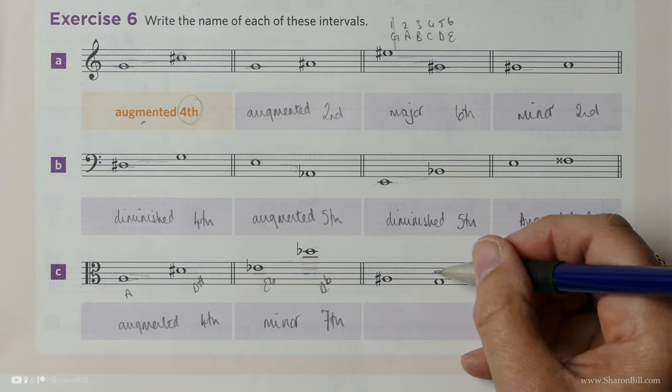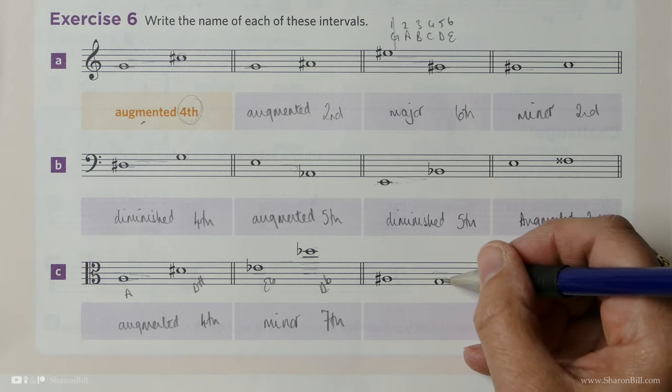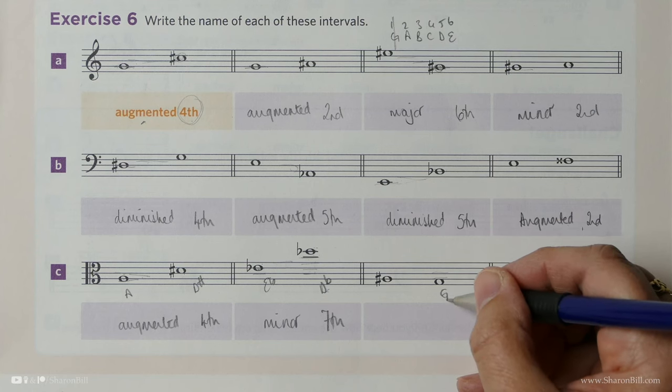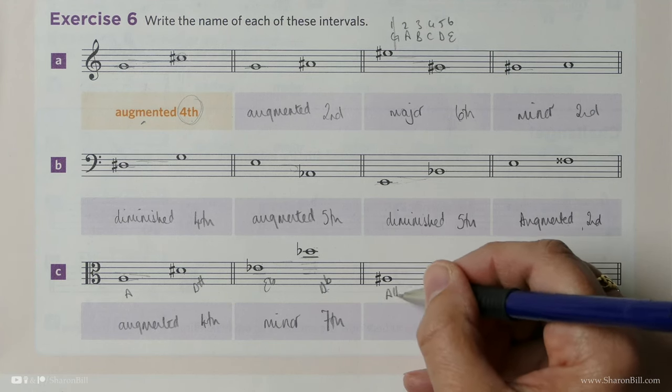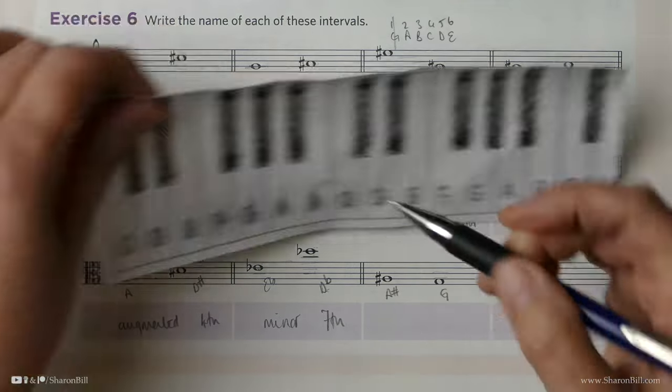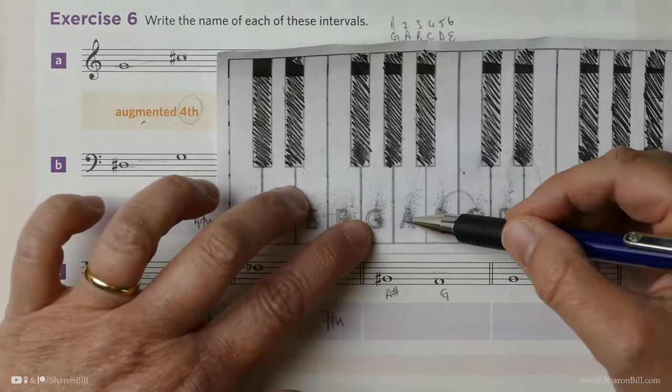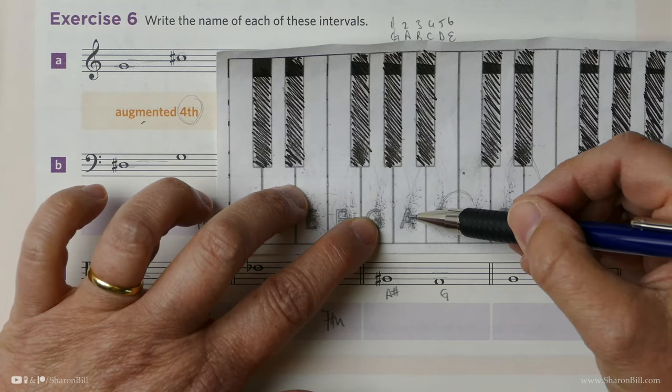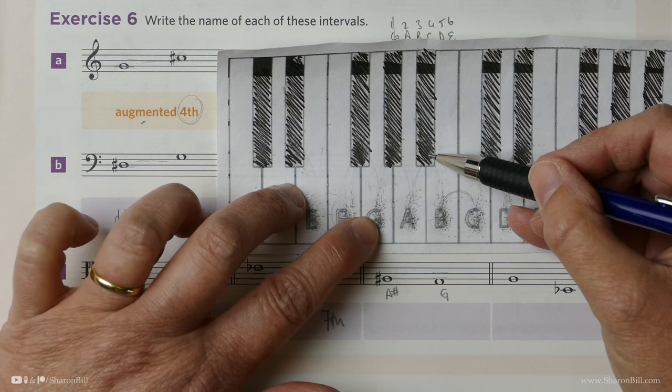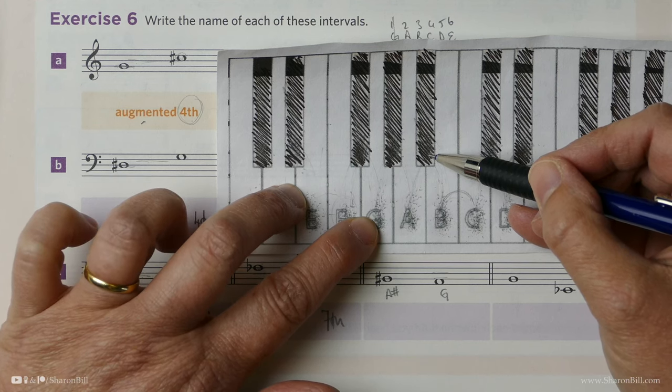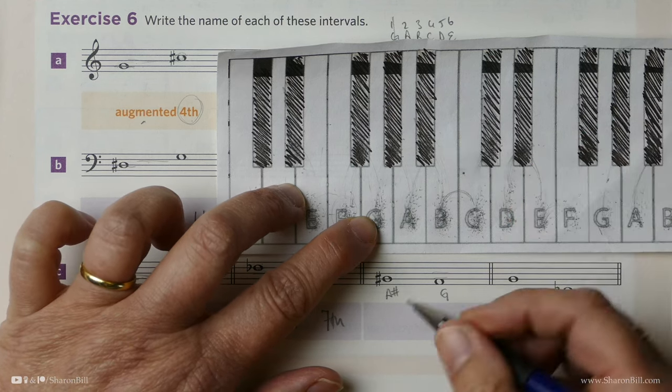And then here we have a C, B, A, G. Remember, we always count from the lowest note. Next door note up is an A that is raised with a sharp. Now G to A is a full tone. That's a major second. And then we raise it again to the A sharp. And that makes it an augmented second.